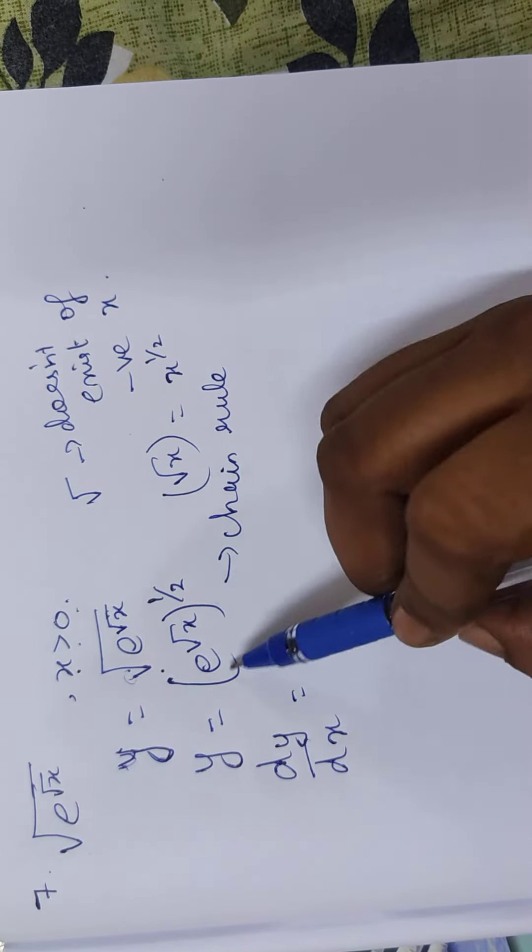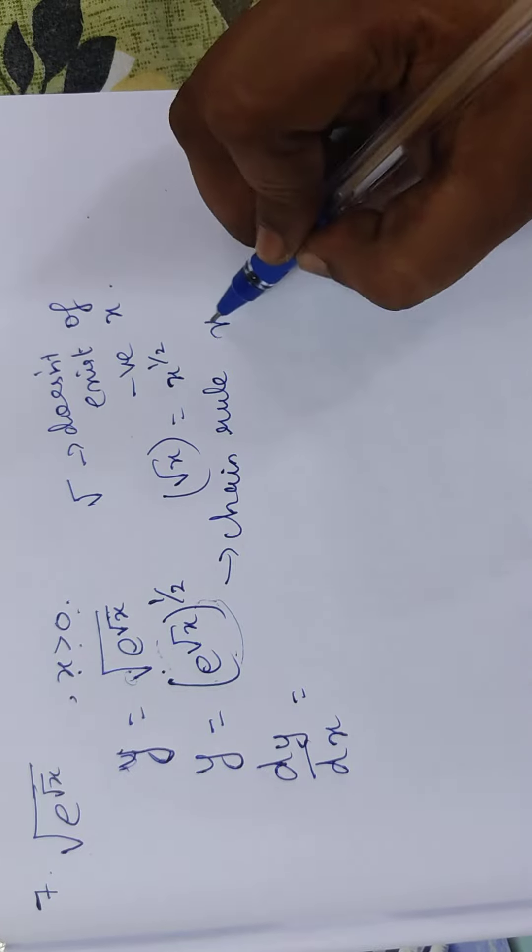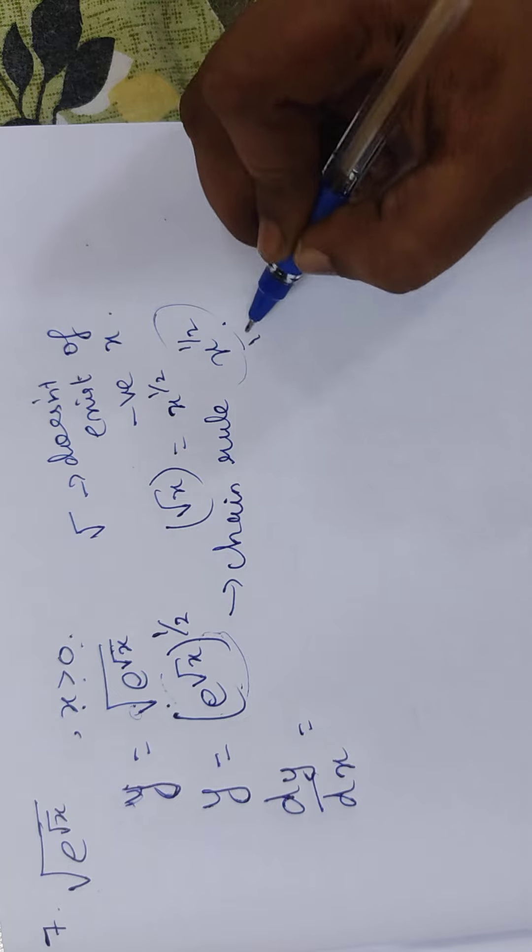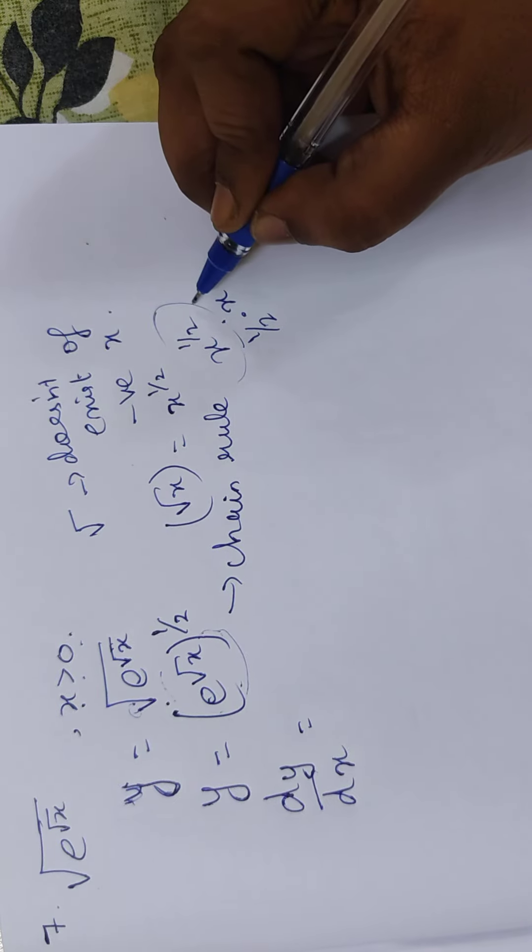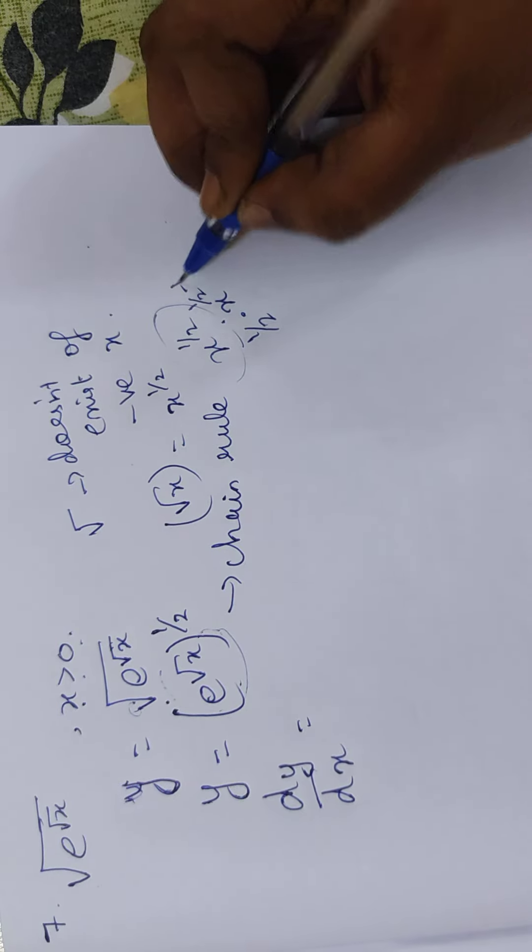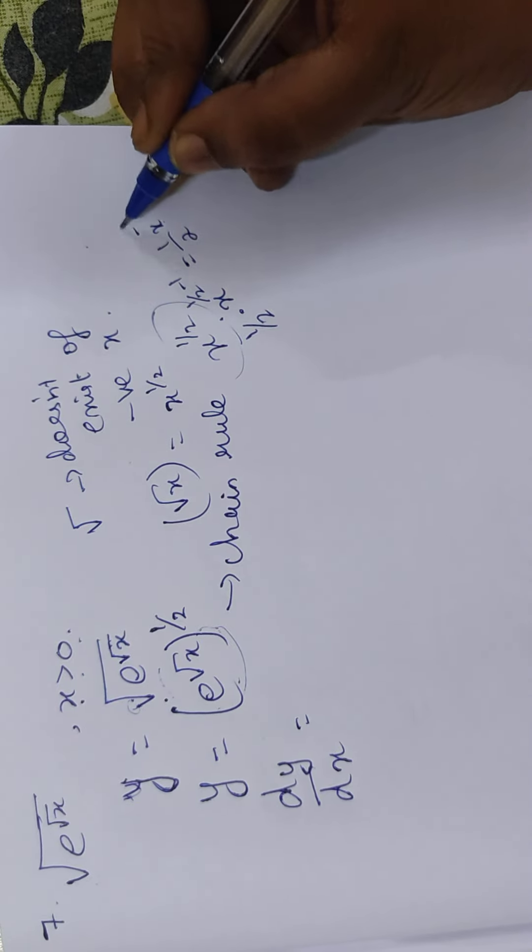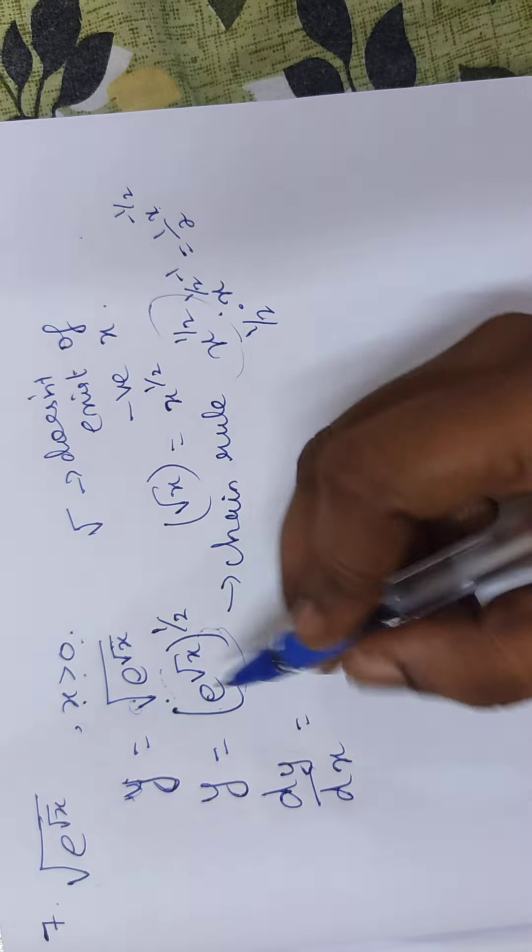So full term, x to the power 1 by 2 assume. So x is equal to 1 by 2. 1 by 2, x to the power 1 by 2 minus 1. This function is equal to 1 by 2. 1 by 2, x to the power minus 1 by 2. Correct? So we will differentiate.